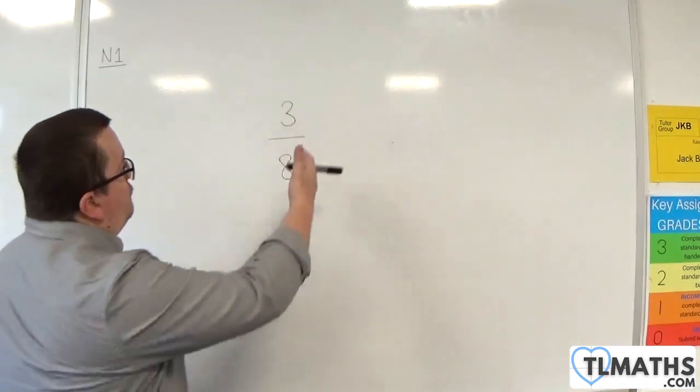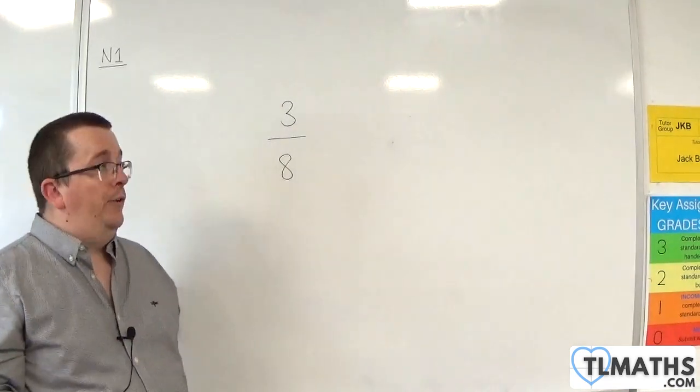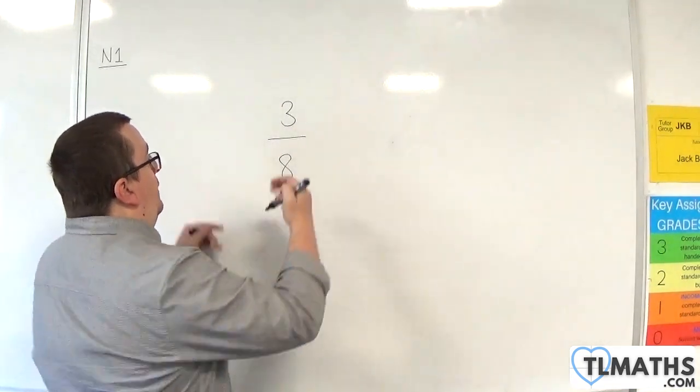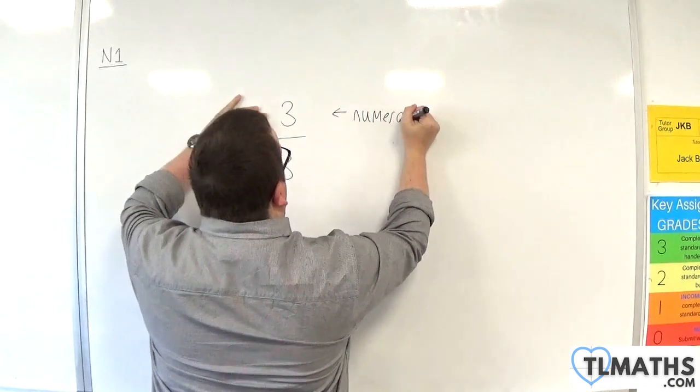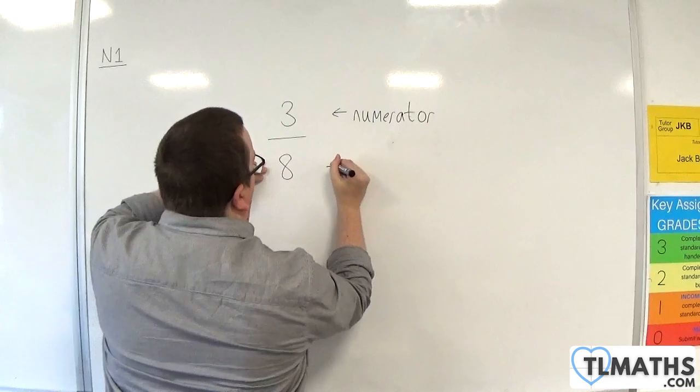So, here is a fraction, 3 over 8, or 3 eighths. And we refer to the number at the top as the numerator, and the number on the bottom as the denominator.